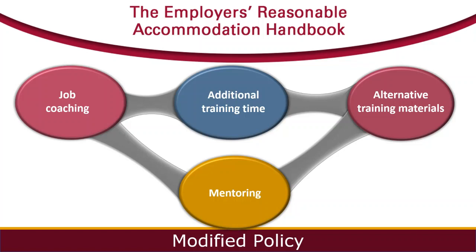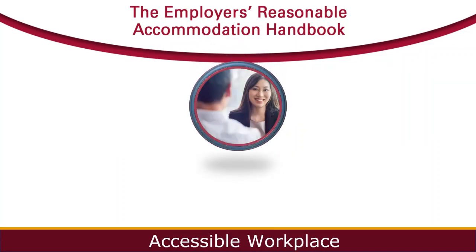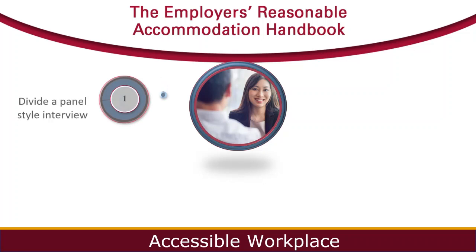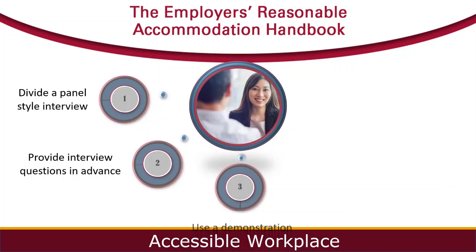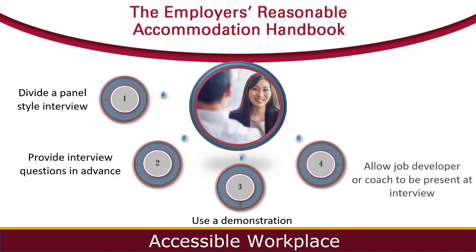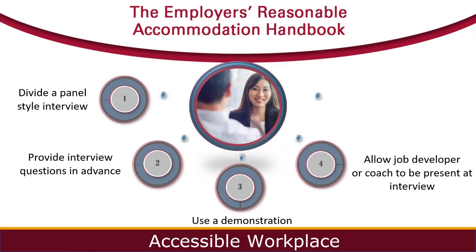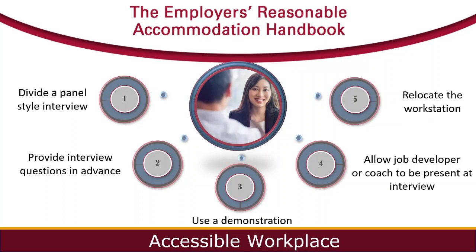Going back to Zach — he utilized a job coach when he started working at Walmart. Providing a job coach is an example of modifying a policy, like a training policy, as a form of reasonable accommodation. This is a common accommodation for people with developmental and intellectual disabilities. A job coach might assist in several different situations: a new employee might benefit from additional training, an existing employee might be given a new task or a promotion, or a current employee might be struggling to meet performance standards. In any of these situations, a job coach could collaborate with the employer to train the employee to work independently.